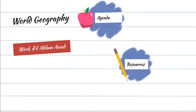Throughout Unit 1, you guys have done a lot of work and we've explored the geography basics in depth, where we looked at longitude and latitude, the five themes of geography, why seasons change, the water cycle, and climate regions in depth, especially the difference between climate and weather.